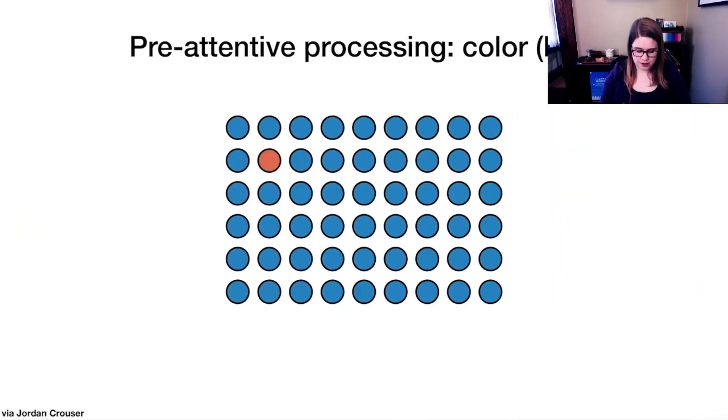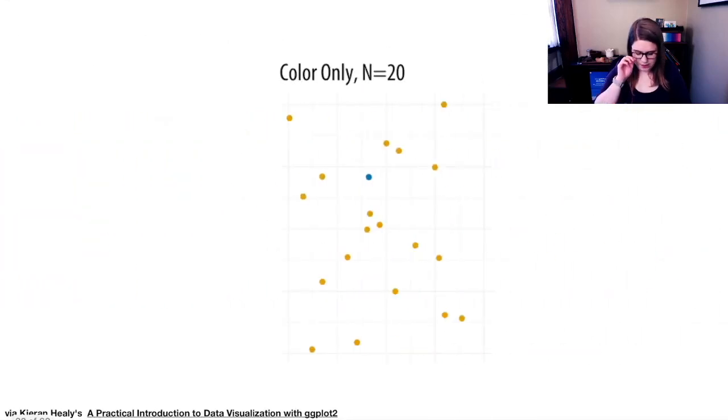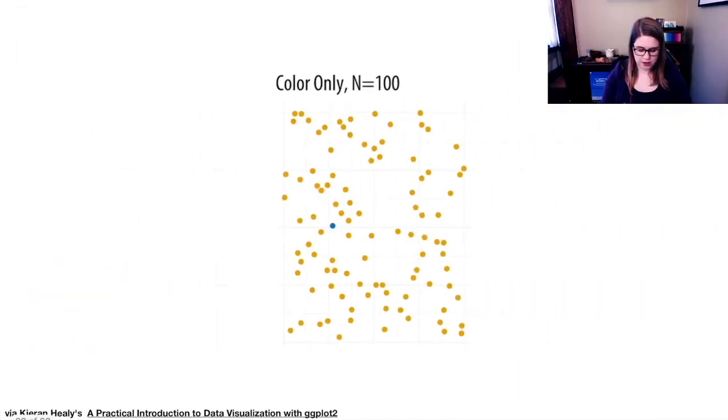Let's go through some of these colors. Here's how color would be processed pre-attentively. Kieran Healy has a practical introduction to data visualization, specifically with ggplot. But I think the examples pertain to visualization and other tools as well. He shows how the density impacts some of these pre-attentive processing. If we have 20 data points on our page, maybe it's a little bit easier to determine the thing that is different based on color. If there's more points, I think we can still see it, but maybe it takes like a millisecond longer.